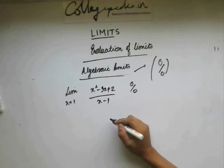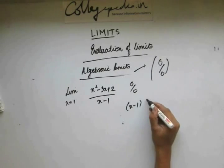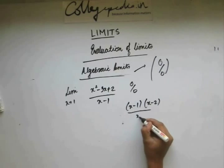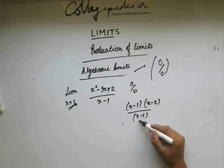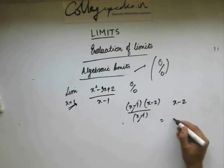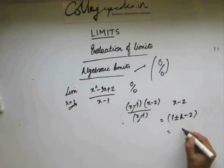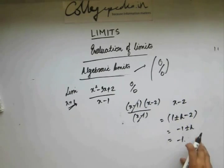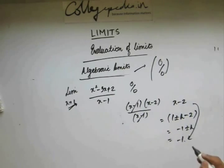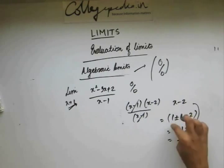Another approach is the factorization method. Separate the factors of the numerator and denominator — the numerator factors are (x − 1)(x − 2) and the denominator is (x − 1). Since x is approaching 1, not equal to 1, we can cancel the common factor. We're left with (x − 2). Substituting x = 1 + h, as h approaches 0, this becomes −1, confirming the limiting value is −1.